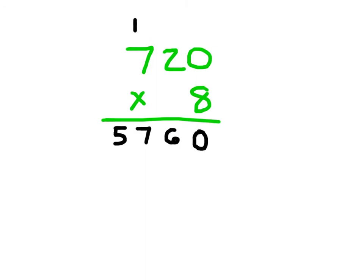720 times 8 equals 5760. Just because there's a 0 in the ones place here of this factor, we still do have to multiply into that ones place. The same thing will hold true if that 0 appears in any other place within our number.